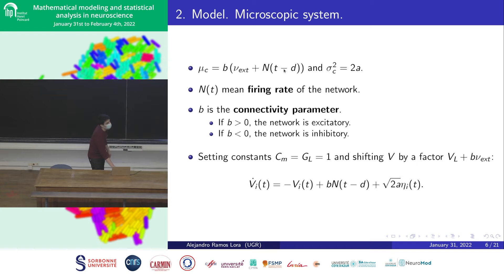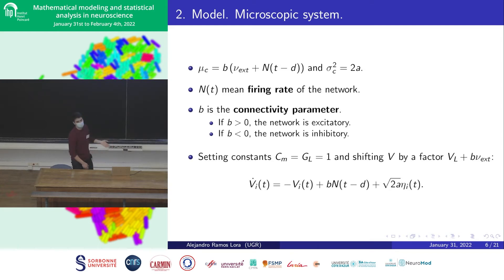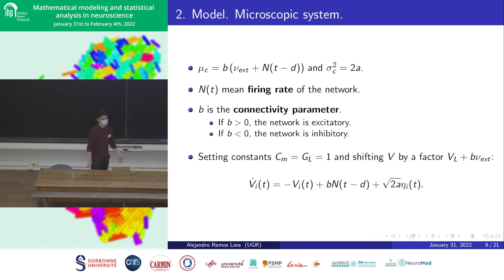B is the connectivity parameter and tells us how excitatory or inhibitory the network is. If B is bigger than zero, the network will be excitatory. If B is less than zero, the network is inhibitory. If B is zero, there is no coupling between the neurons.